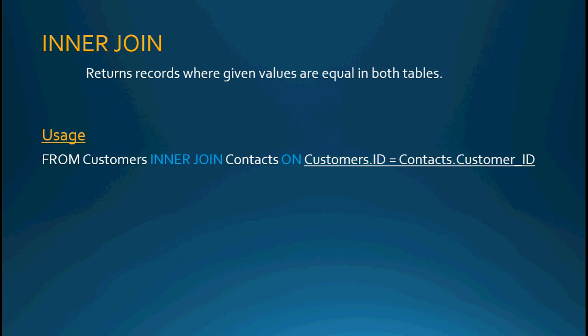You'll notice that we have this keyword ON. ON is followed by the two fields from both of the tables that we need to be looking at in order to determine what records to return. We're going to take from table one and join it with table two, and wherever the field from table one is equal to the field from table two, we're going to return all of those records. That's what we're looking for when we're doing an inner join.